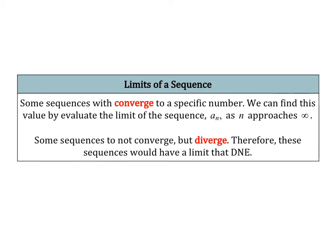Now we're going to be taking the limit of a sequence. Sometimes when you start listing out the terms in a sequence, you'll notice that those terms approach a specific number — we call that converging to a specific number. We can find that number by evaluating the limit as n approaches infinity of your sequence, just as we would a normal function. Not all sequences converge; some diverge, like a simple arithmetic sequence that just keeps increasing or decreasing — those limits do not exist.